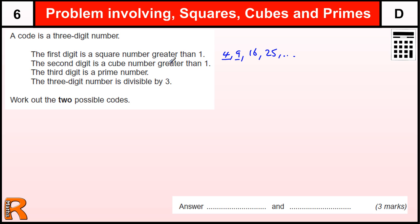The second digit is a cube number greater than 1. So a cube number greater than 1, the first one obviously is 1. Then we've got 8, which is 2 cubed, 2 times 2 times 2. And then we've got 27, we don't need that because we only want single-digit numbers. So 8 has to be the second digit, so our answer is going to be something 8 something.